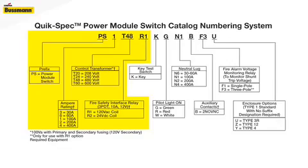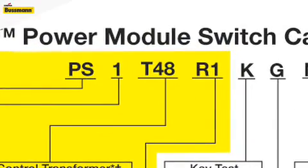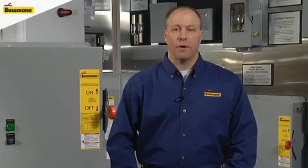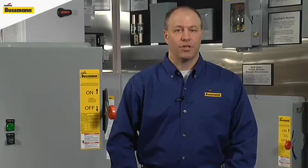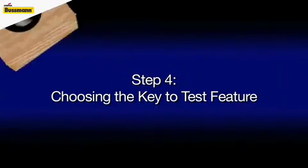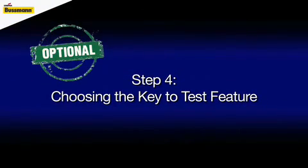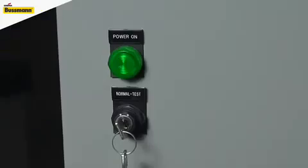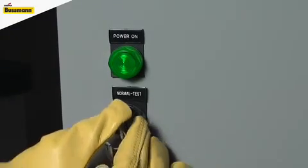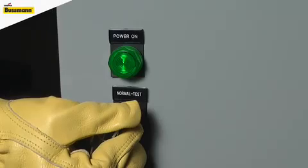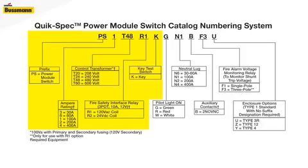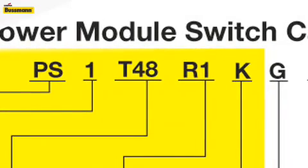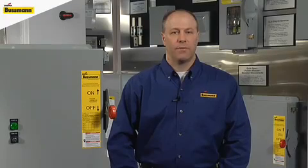So far we have selected three different sections of the power module part number. One very convenient feature is the ability for the mechanic or inspector to check operation of the shunt trip device on site at the panel location. The key-to-test feature in step four allows an easy and safe way to test for proper operation. If you do not select this option, the only way to test the system is to send a signal from the fire alarm control panel. Simply add the K code into the part number configuration as shown. If you do not want this or any other optional feature, simply eliminate the space in the part number sequence and your final part number will be shorter.